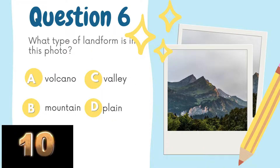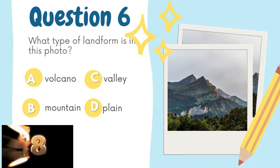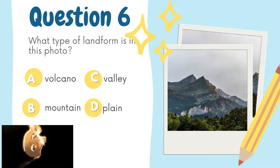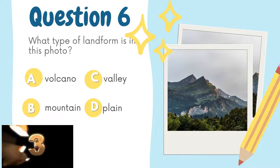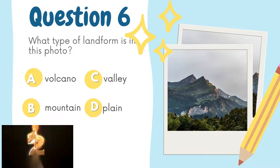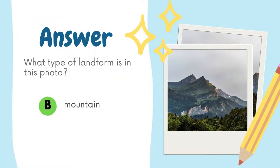Here is your question number 6. What type of landform is in this photo? Option A: Volcano. Option B: Mountain. Option C: Valley. Option D: Plain. And the correct answer is Option B: Mountain.